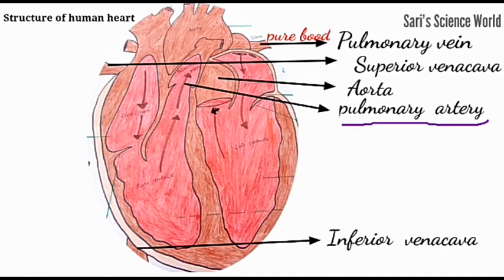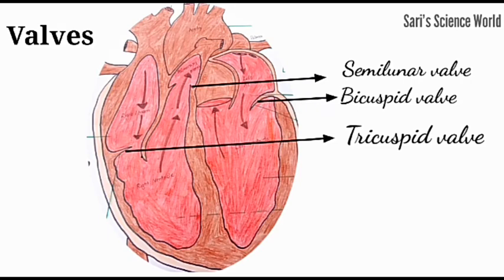Blood is distributed through the aorta, which is the largest blood vessel in the human body. There are four valves in the heart. The valve between the right atrium and right ventricle is called the tricuspid valve.